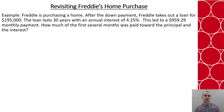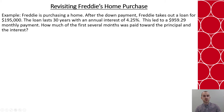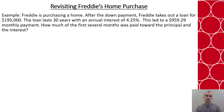Let's go back to an example we used when we were calculating the monthly payment of a mortgage — that was with Freddie's home purchase. In that example, we said that Freddie took out a loan for $195,000 for 30 years with an annual interest of 4.25%. We calculated previously that that was a $959.29 monthly payment. But now we want to know what's really happening with the principal and interest in each of these cases.